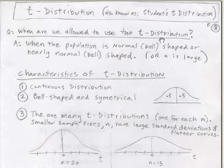When are we allowed to use the t-distribution? When the population is normal, bell-shaped, or nearly normal, or if your n is very large.